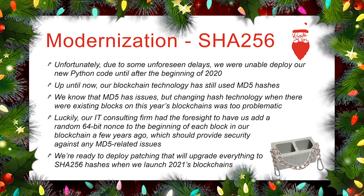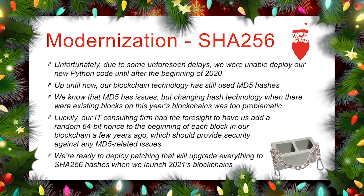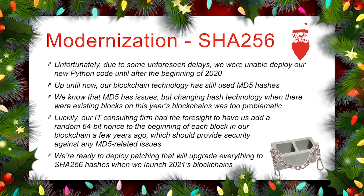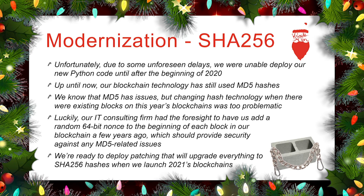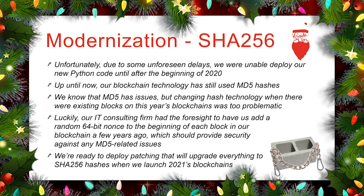You may have noticed that we talk a lot about cryptographic hashes. Unfortunately, due to some unforeseen delays, we were unable to deploy our new Python code until after the beginning of 2020, when we already had blocks in the blockchain. Our previous blockchain code used MD5 hashes, and we know that MD5 hashes have some potential issues. Luckily, several years ago we began adding a 64-bit random nonce to each of the blockchain blocks — that's what I described as the nonce when we looked at the contents of a blockchain block. Those 64-bit nonces are added to the beginning of the block in order to keep us from having any issues surrounding MD5. We're ready to deploy patching to switch over to SHA-256 hashes once we begin our rollout of 2021's blockchain.